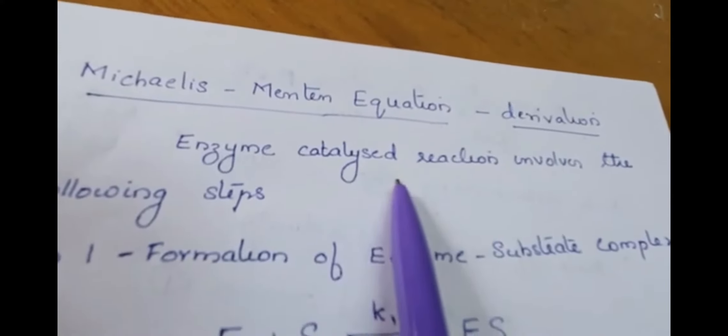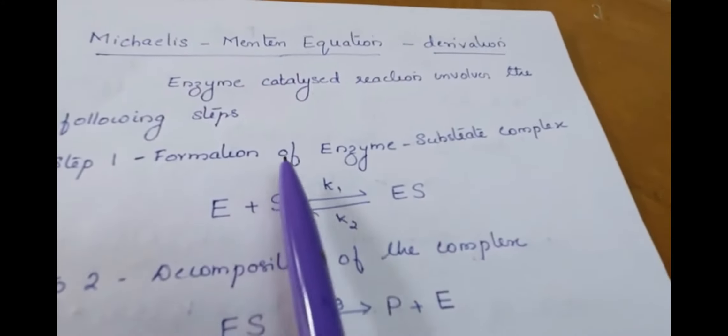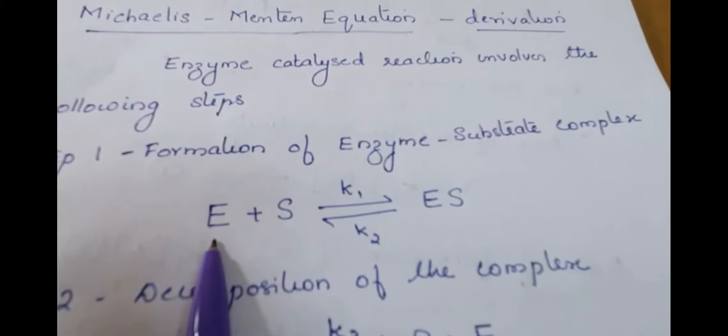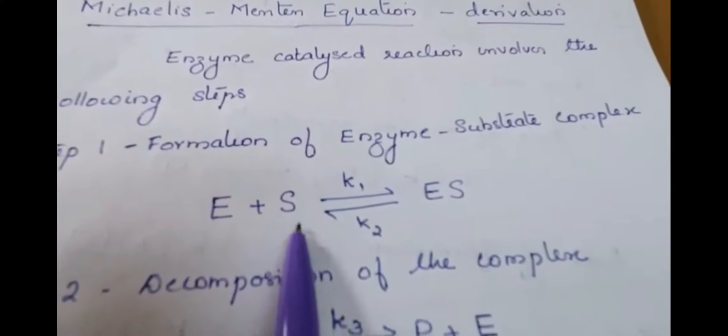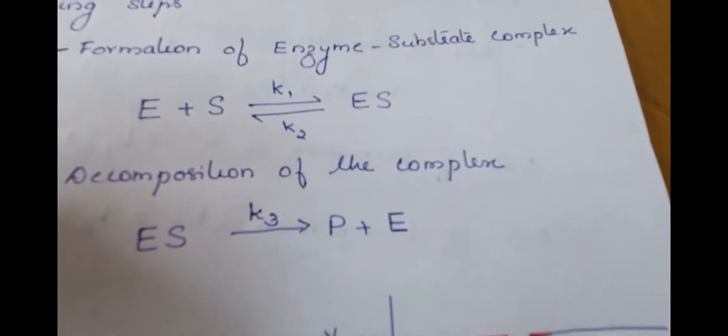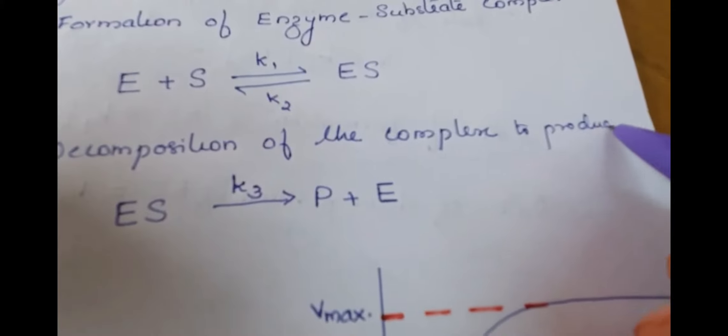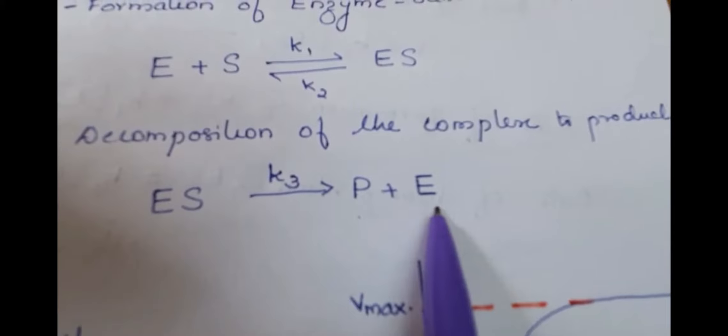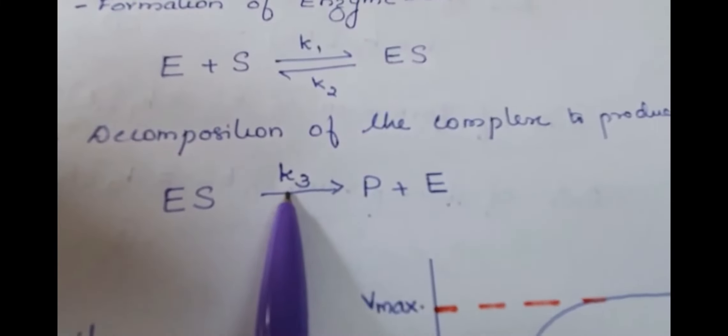Derivation of the Michaelis-Menten equation: enzyme-catalyzed reactions involve the following steps. Step 1 is the formation of the enzyme-substrate complex: E + S ⇌ ES, where the forward rate constant is K1 and the backward rate constant is K2. Step 2 is decomposition of the complex to product: ES → P + E, with rate constant K3.